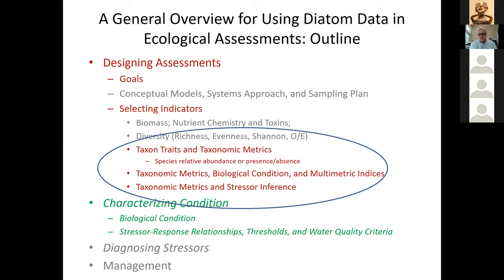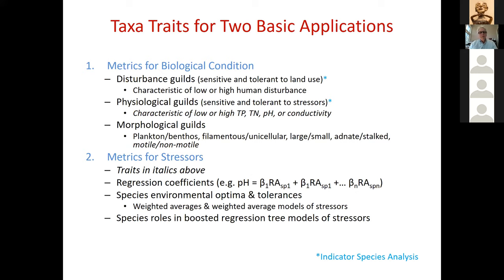Now I want to give examples of how we use diatoms — starting with how to get information from taxonomic traits and metrics, then two sets of examples: one for characterizing biological condition and one for stressors. We use traits to calculate biological condition metrics and traits to calculate stressor metrics. There are a number of different kinds of traits that we use.